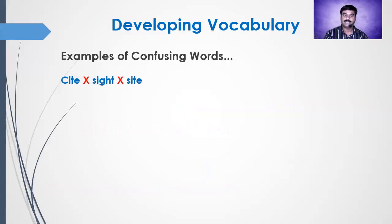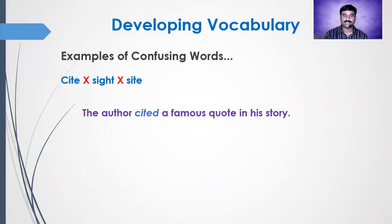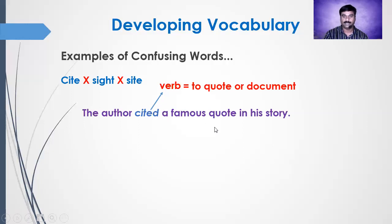The next group is C-I-T-E 'cite', S-I-G-H-T 'sight', and S-I-T-E 'site'. Let us have an example of each. First: 'The author cited a famous quote in his story.' Here, 'cited' is a verb — you might have observed the -ED suffix added to the root word. 'Cited' means to quote or reference a document, so the author quoted a famous quote in his story.